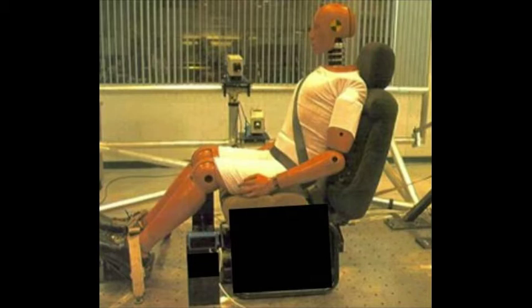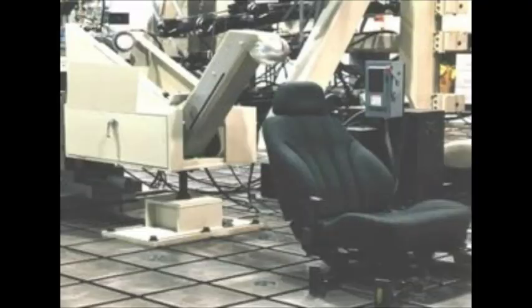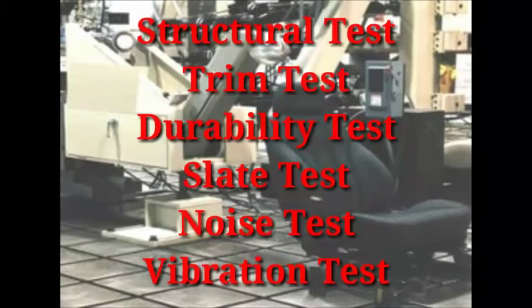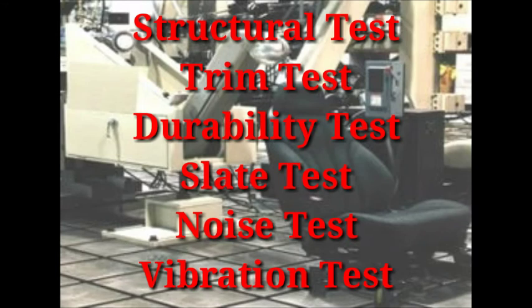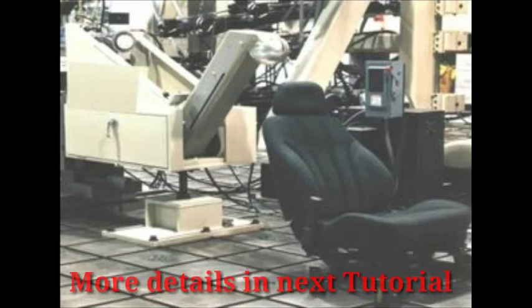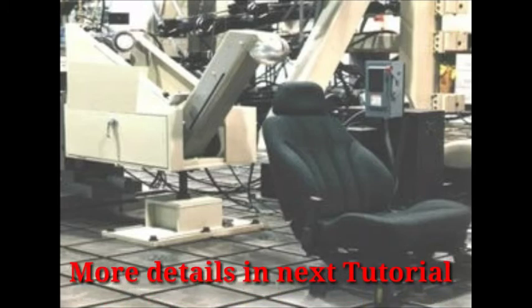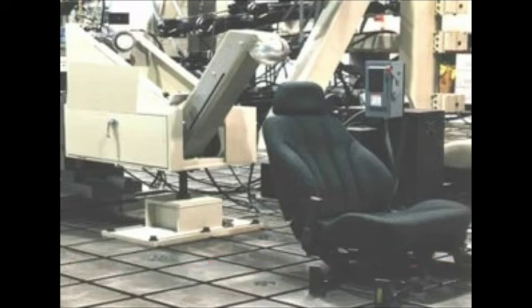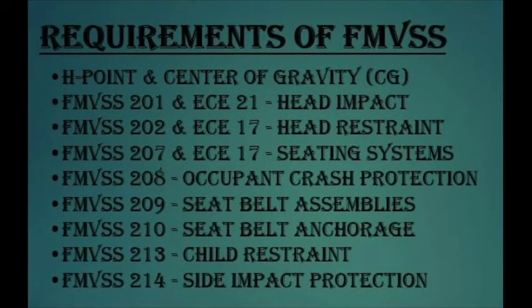Now we are going to see which physical tests are required during seating system design. First is the structural and regulation point of view — we should conduct the test. Then there is the trim test, durability test, slide test, and noise and vibration test. All these physical tests must be conducted to complete the regulatory standards. The regulations are FMVSS — Federal Motor Vehicle Safety Standards — and ECE — Economic Commission for Europe.